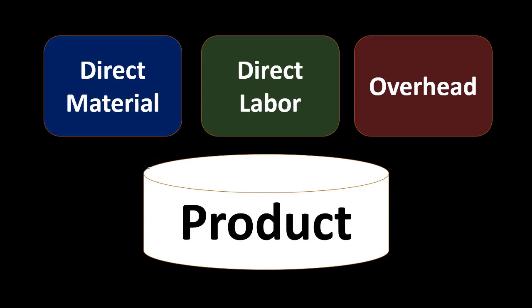Anytime we think about inventory, whether we make it or whether it be made someplace else, its costs include direct materials, direct labor, and overhead. For a manufacturing company, it's not just the materials within the product — the labor we put into it also matters. The cost of the labor, the wages we pay, are not going to be a period expense but will be part of the cost of inventory, capitalized and put on the balance sheet as an asset until we sell the inventory.